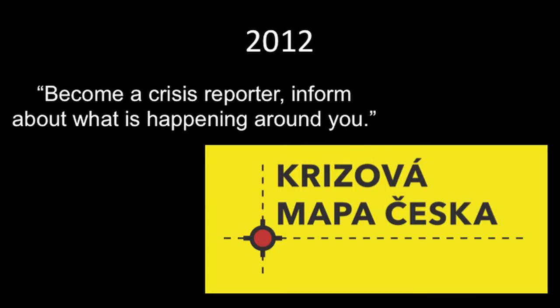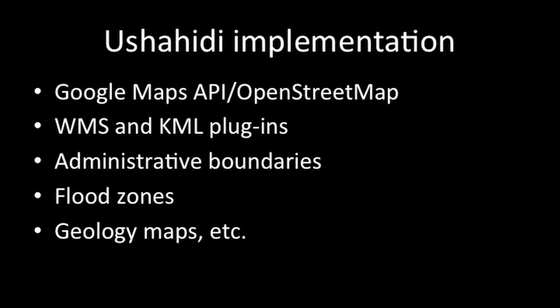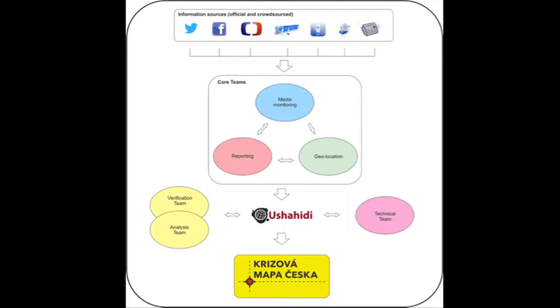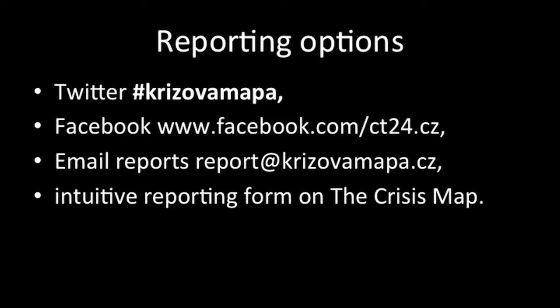Two years later, they realized they wanted to put this information on a map. They started a project called the crisis map, saying: become the crisis information source, report what is happening around you. They started implementing Ushahidi with the very typical setup — Google Maps and OpenStreetMap as the background, WMS and QML plugins, and other maps and zones on it. The whole Ushahidi application was very typical: feeds came from direct Facebook and Twitter, from the news, or from people who went directly to the team, then through a verification process, an analysis process, and ended up on the map. Reporting was done via Twitter, Facebook, email, or by going directly to the map, clicking where it happened, and submitting a report.